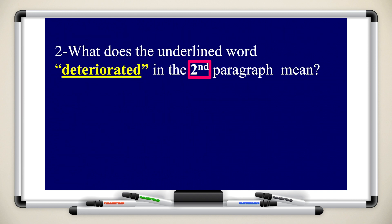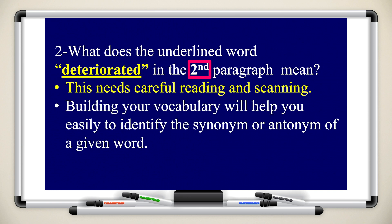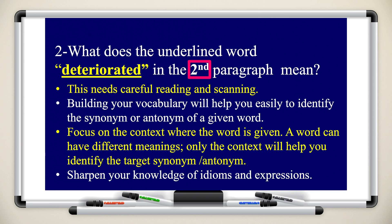In the multiple choice, this is the second question: what does the underlined word 'deteriorated' in the second paragraph mean? This needs careful reading and scanning. Build up your vocabulary — this will help you identify synonyms or antonyms of words. Focus on the context where the word is given, and sharpen your knowledge of idioms and expressions.